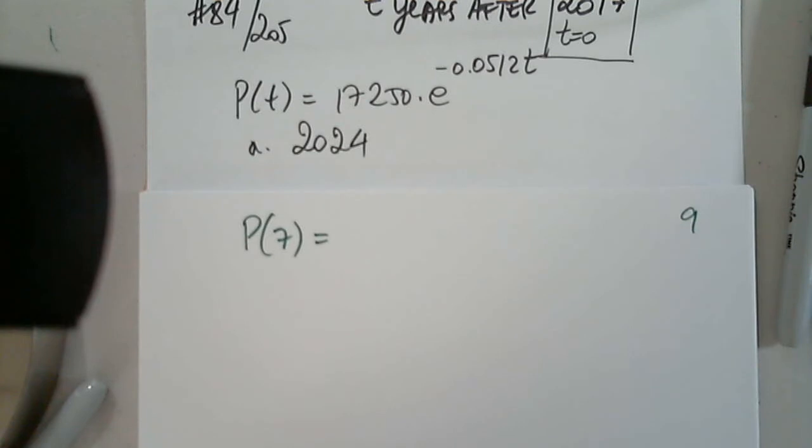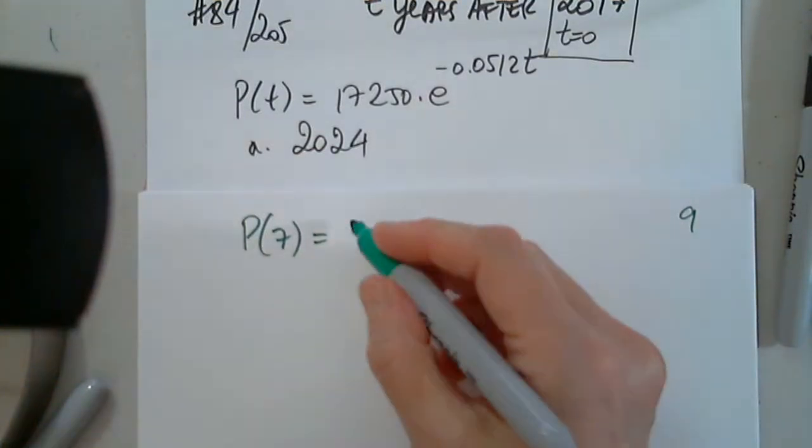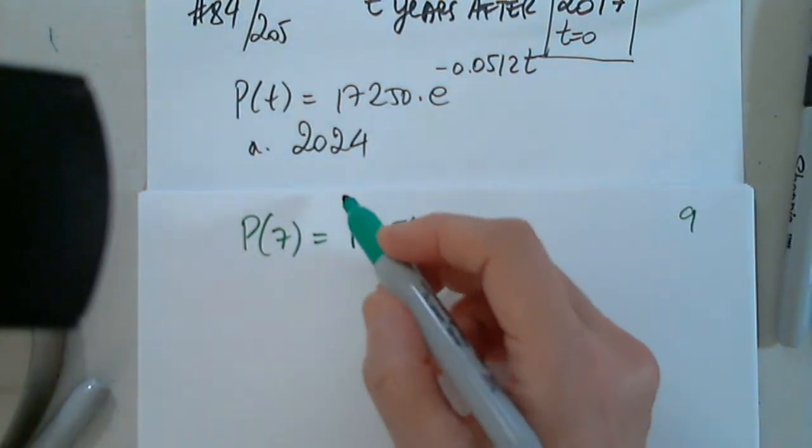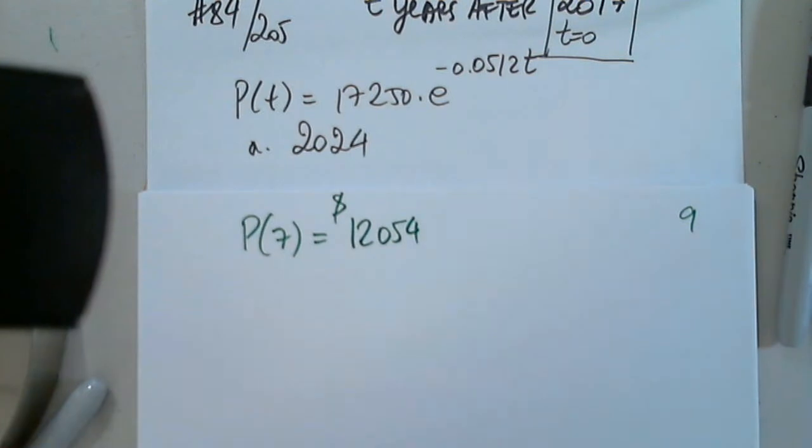17,250·e^(-0.0512t). So we want to plug in seven. And when I plug in seven, I get 12,054. Since we're talking about people, I would not dare to do anything and just write 12,054.